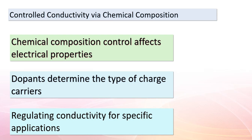Our journey into the realm of metalloids and semiconductors brings us to a pivotal realization: by controlling the chemical composition, we can master the electrical properties of materials. When we add dopants to silicon, we're not only altering its conductivity but also determining the type of charge carriers it hosts. This remarkable control allows us to craft semiconductors with tailored properties — whether for data processing in integrated circuits or signal amplification in transistors — opening up endless possibilities in the world of electronics. The building blocks of modern technology rest upon these foundations.